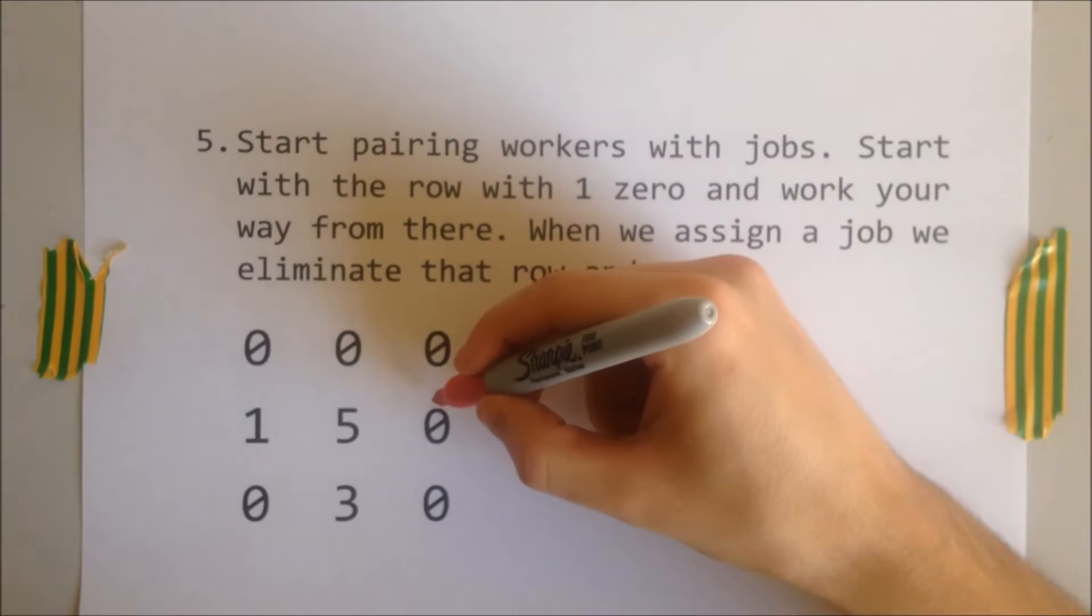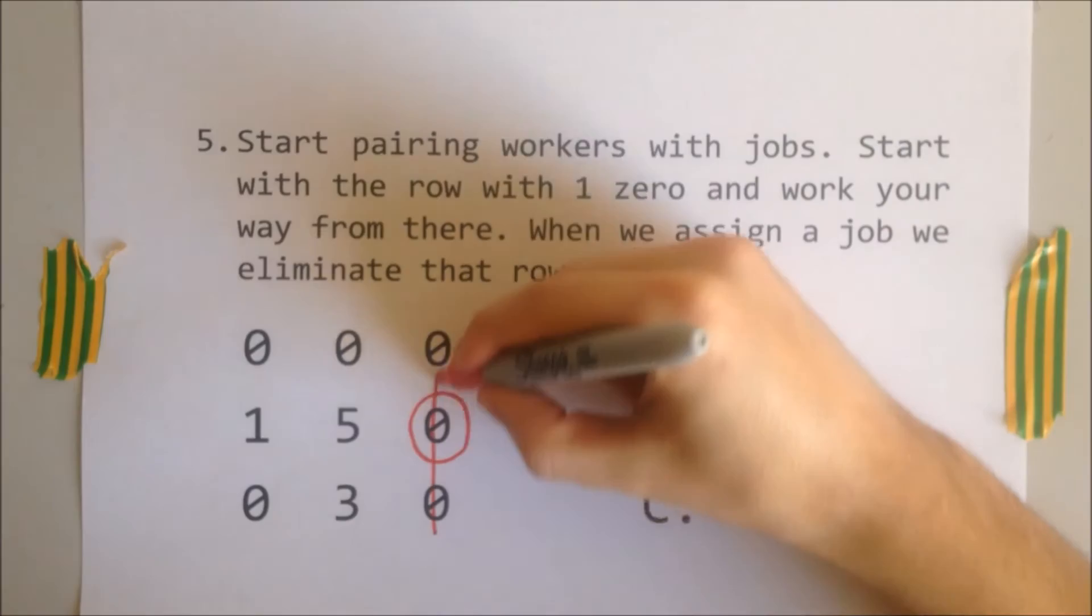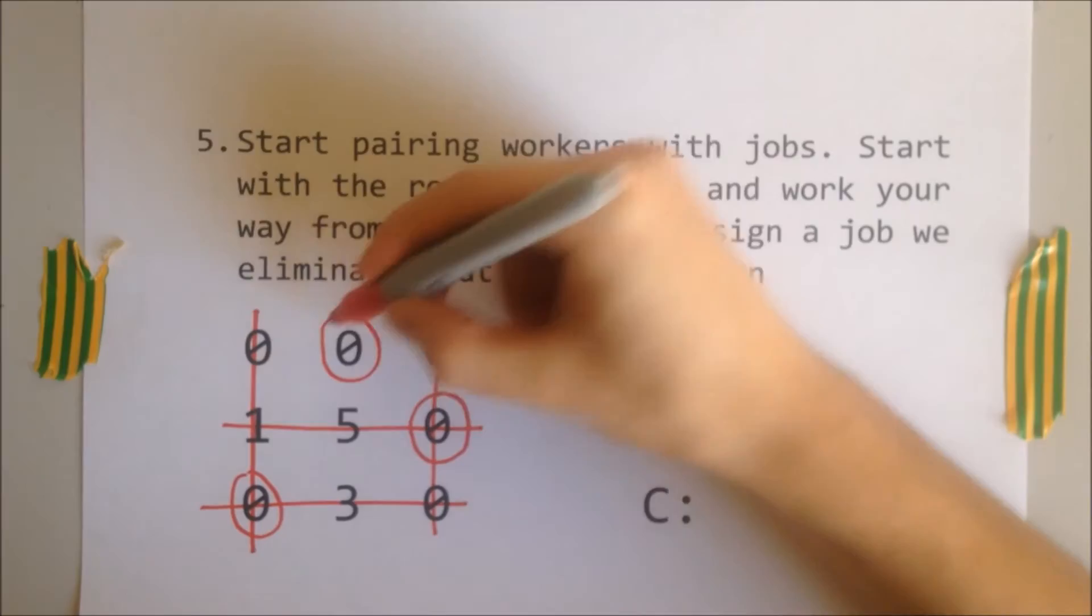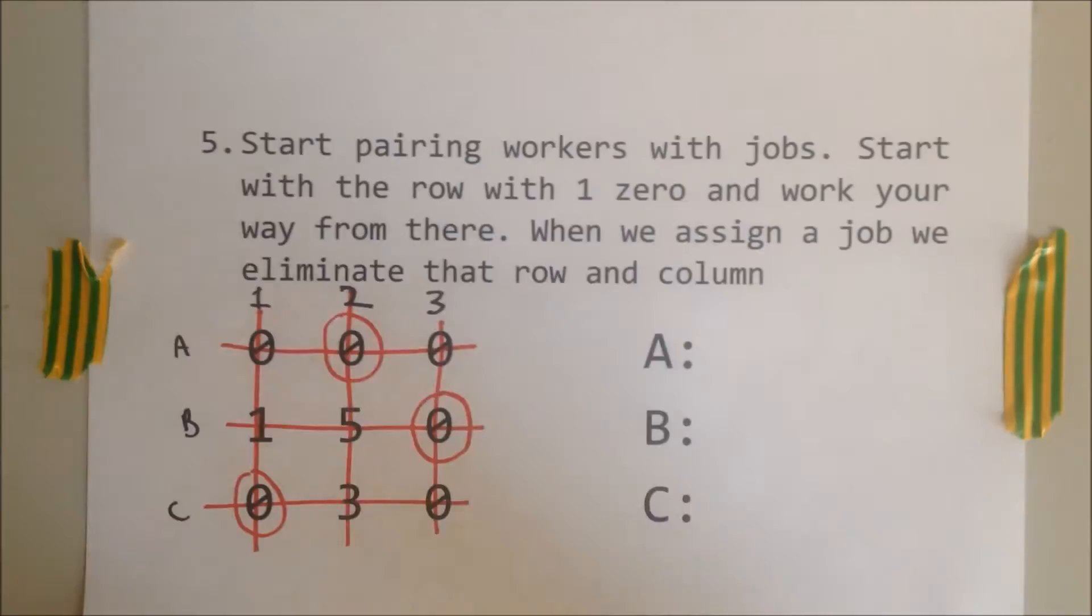Step five, start pairing workers with jobs. Start with a row with one zero and work your way from there. When we assign a job, we eliminate that row and column. We can start by pairing B to job three and we eliminate that row and column. This then frees up another worker to be paired, C to job one, and then finally A to job two. This is our final solution.